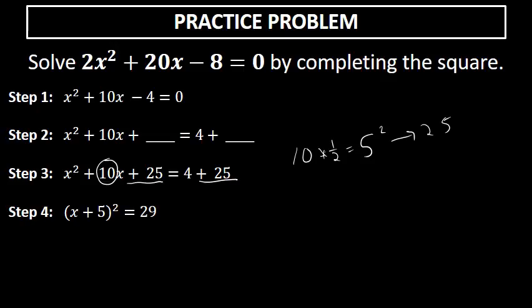Step four: factor. After completing the square, the factorization is always a perfect square. Bring down x, bring down the plus sign, and the square root of 25 is 5, so the factorization is the quantity x plus 5 squared. On the right side, 4 plus 25 equals 29.